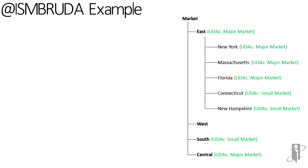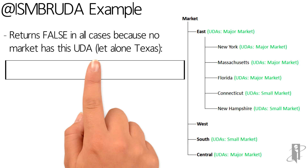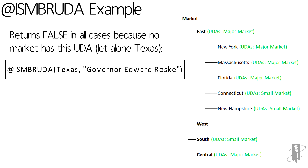Now let's say we wanted to check the great state of Texas to see if the governor happened to be Edward Roski. We would say isMemberUDA, Texas, comma, "Governor Edward Roski". Well that's going to be false because that UDA doesn't actually exist anywhere on earth, let alone in our outline.